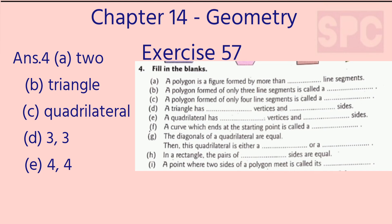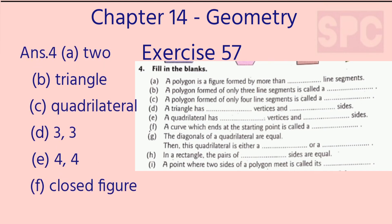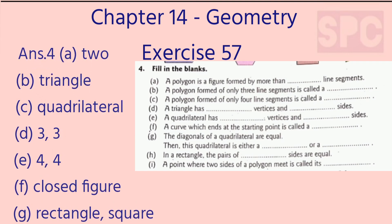Part G: The diagonals of a quadrilateral are equal — then this quadrilateral is either a rectangle or a square. So in one blank we write rectangle, and in the other we write square. Part H: In a rectangle, the pairs of opposite sides are equal.